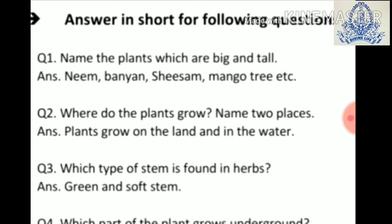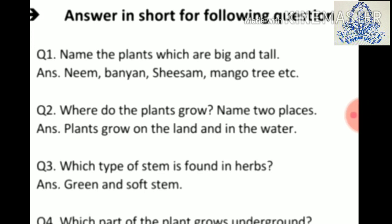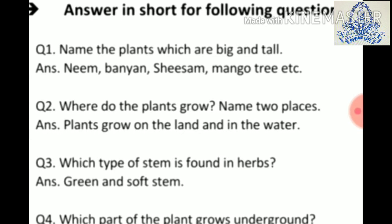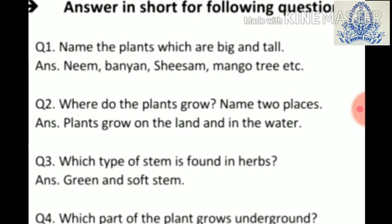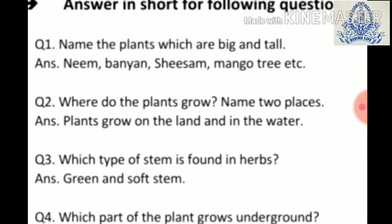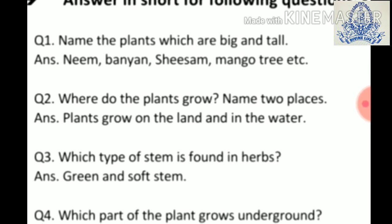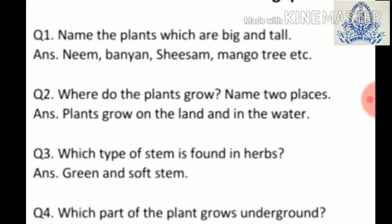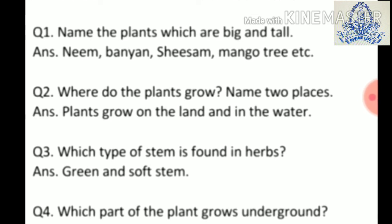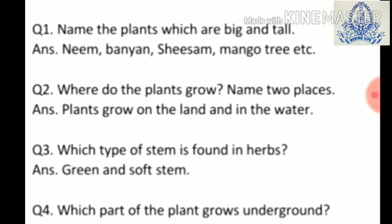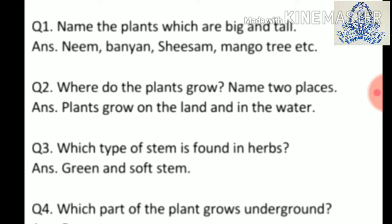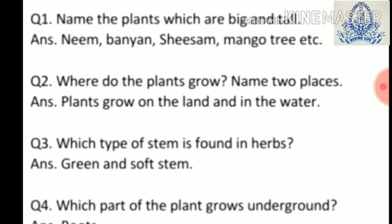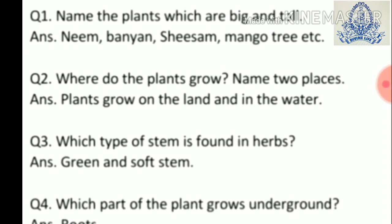Now write down the heading: Answer in short the following questions. First: name the plants which are big and tall. Answer: neem, banyan, sisham, mango tree, etc. Second: where do plants grow? Name two places. Answer: plants grow on the land and in the water.